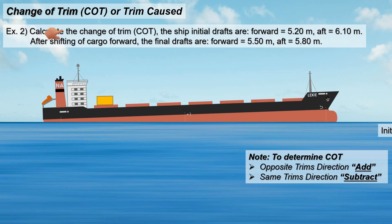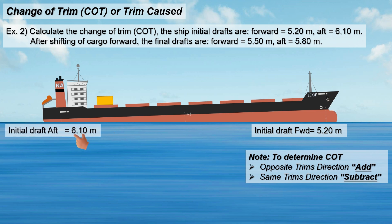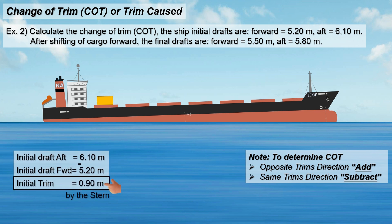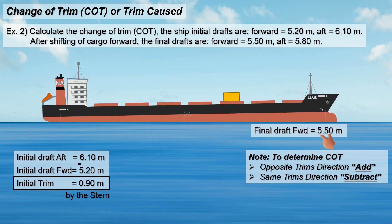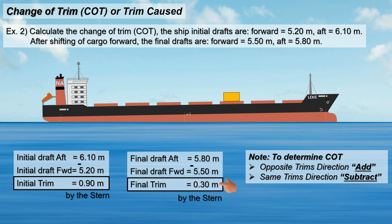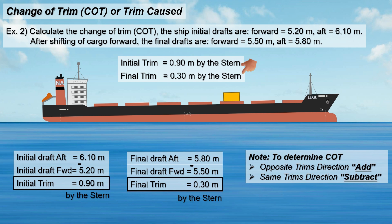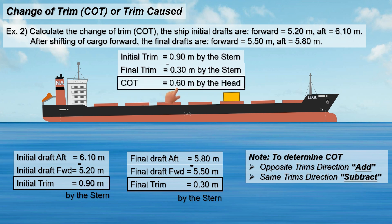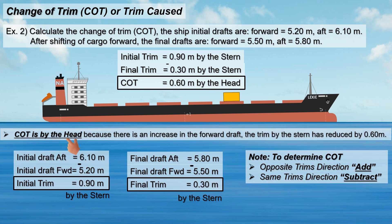Let's have another scenario. The initial draft forward is 5.20 meters and the initial draft aft is 6.10 meters, giving an initial trim of 0.90 meter by the stern. After shifting weight forward, the draft forward becomes 5.50 meters and the aft draft is 5.80 meters, giving a final trim of 0.30 meters by the stern. Since both the initial and final trims have the same direction, we calculate the change of trim by taking the difference. The change of trim is 0.60 meter by the head, because the forward draft increased, indicating the vessel's bow moved deeper in the water, and the aft trim reduced by 0.60 meter.